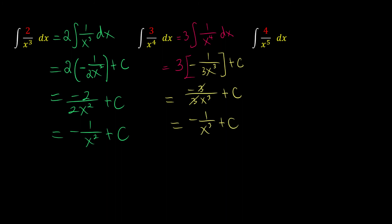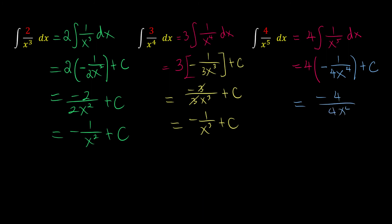For 4 times the integration of 1 over x to the power of 5 dx, we take out the constant 4 and use the pattern: 4 times negative 1 over x to the power of 4 with coefficient 4, plus C. This gives negative 4 over 4x to the power of 4 plus C. Since 4 and 4 cancel, we have negative 1 over x to the power of 4 plus C.